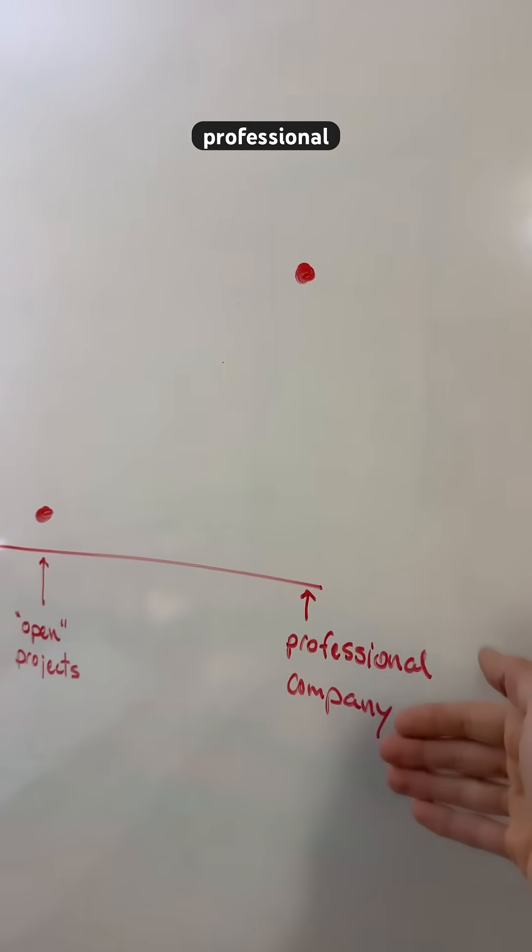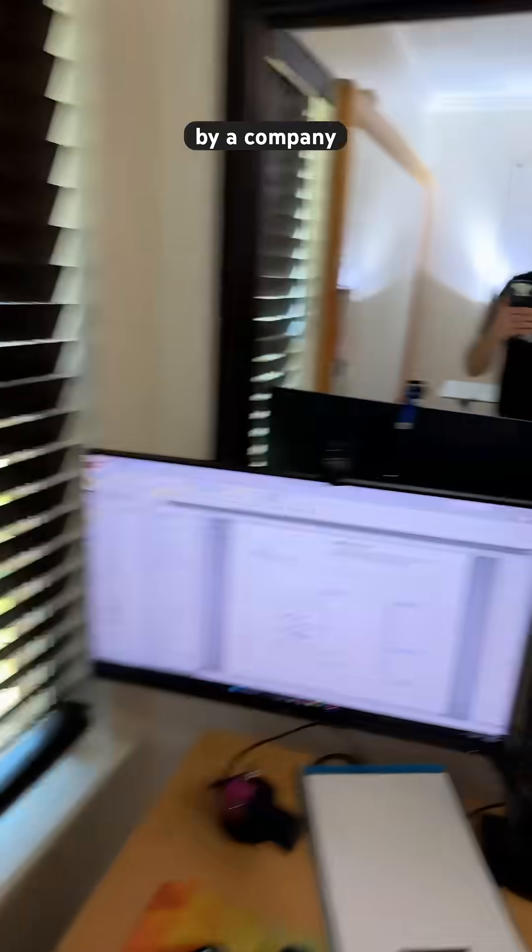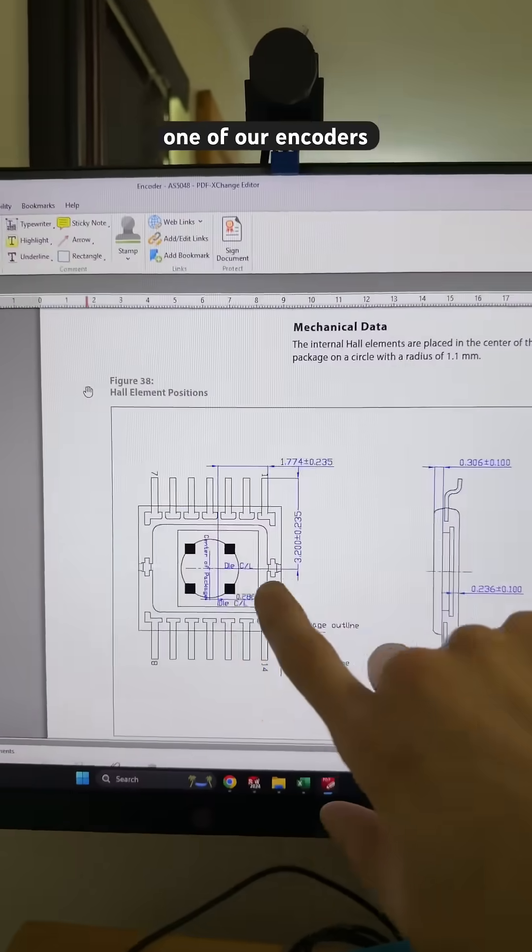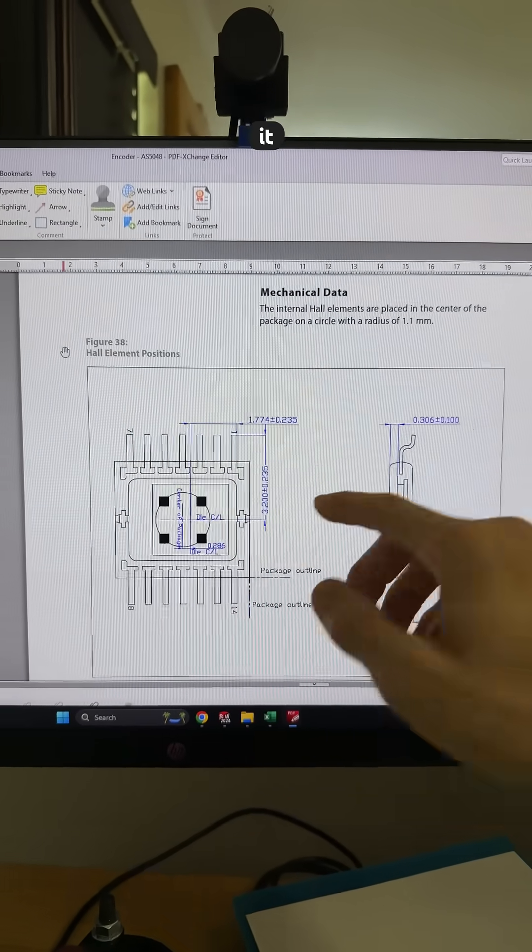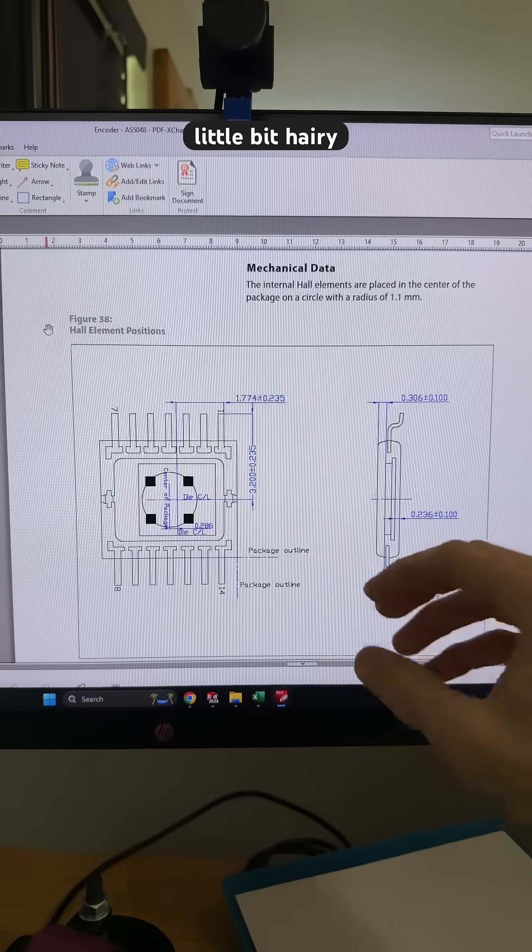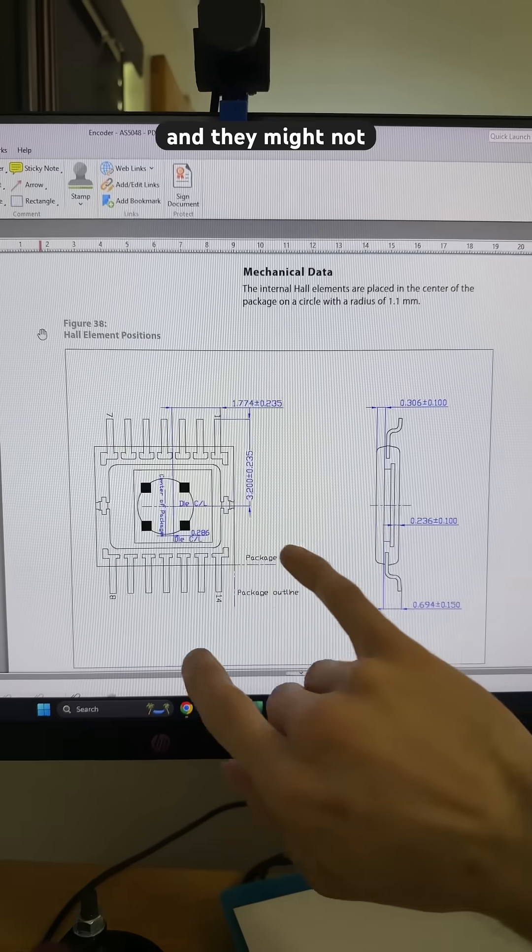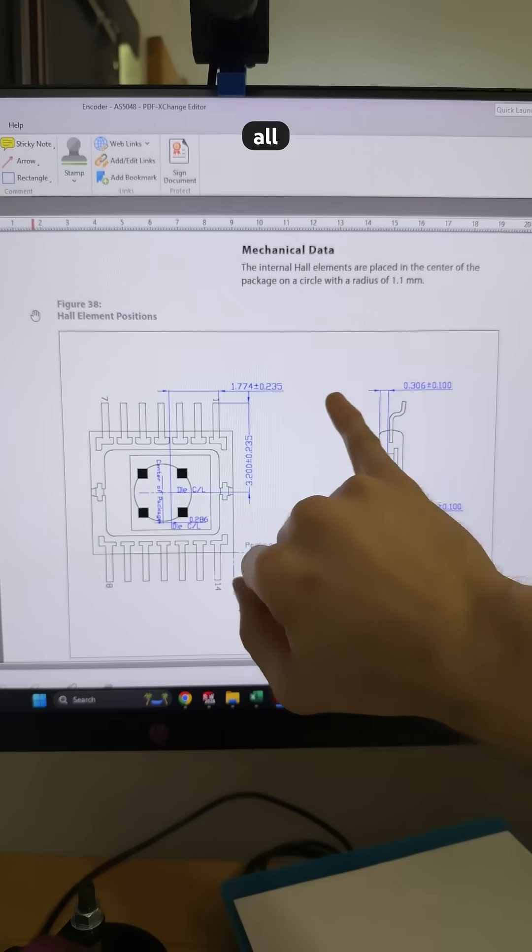Now we go over to the professional level. Made by a company, we have the data sheet for one of our encoders that goes on the robot and this is the mechanical data area. It starts to get a little bit hairy for people who are novices and they may not know what these symbols all mean.